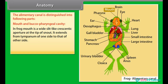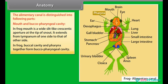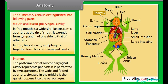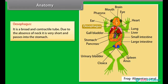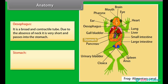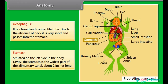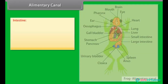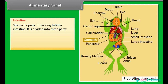In frog, the mouth is a wide slit-like crescentic aperture at the tip of the snout. It extends from the tympanum of one side to that of the other. In frog, the buccal cavity and pharynx together form the buccal pharyngeal cavity. The posterior part of the buccal pharyngeal cavity represents the pharynx, which is perforated by two apertures — the wide, folded gullet situated in the middle, which opens into the oesophagus. The oesophagus is a broad and contractile tube; due to the absence of neck, it is very short and passes into the stomach. The stomach is situated on the left side in the body cavity and is the widest part of the alimentary canal, about two inches long.